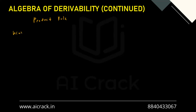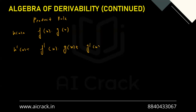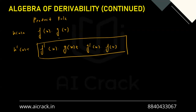If H(x) = F(x)·G(x), then H'(x) = F'(x)·G(x) + G'(x)·F(x). This is the product rule — whenever two functions are multiplied and we want the derivative, we use this formula.